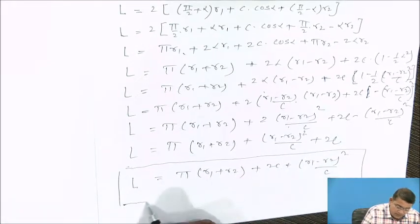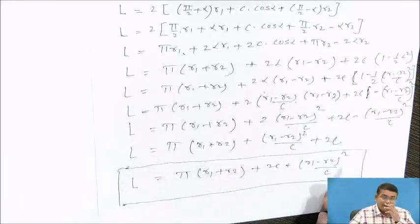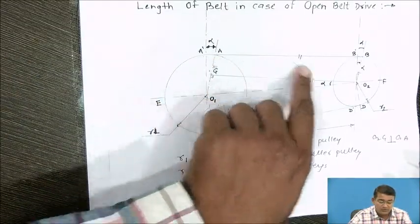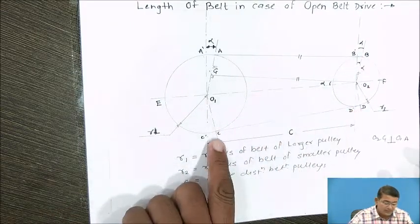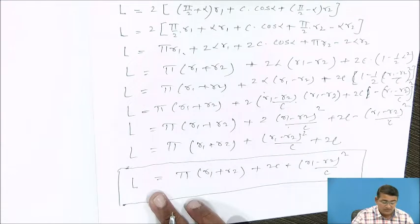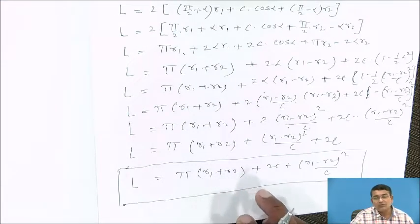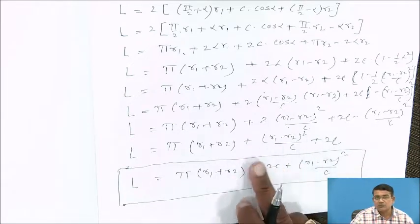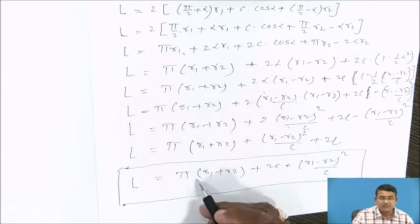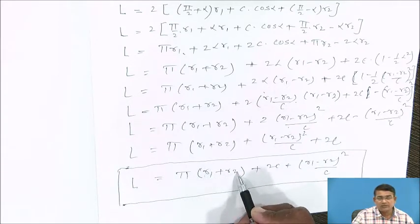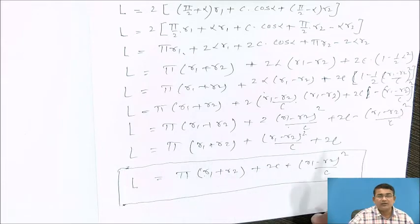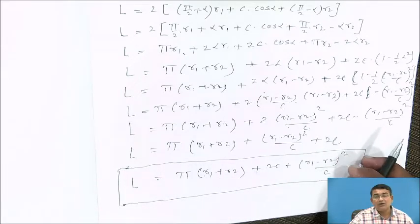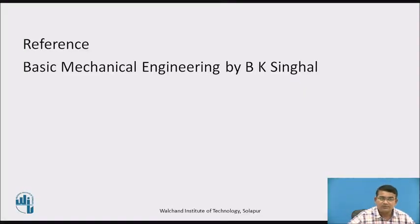So the formula for calculating the exact length of the open belt drive is: L = π(R1 + R2) + 2C + (R1 − R2)²/C, where C is the distance between the two shafts or pulleys, R1 is the radius of the larger pulley, and R2 is the radius of the smaller pulley. The reference used for this video is the B.K. Singhal book.